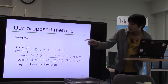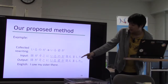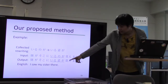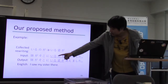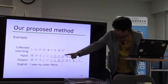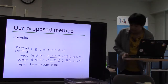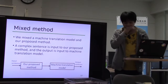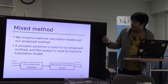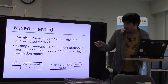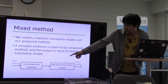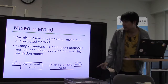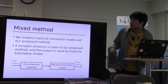Our proposed method works as follows: when the method collects rewriting operations like this, the input is paraphrased to the output. The collected rewriting is applied to the input and produces the output. We also mixed our machine translation model and our proposed model. When an input sentence is given, it is first processed by our proposed method, then the output is given to the machine translation model, and the final output is the result of the mixed method.